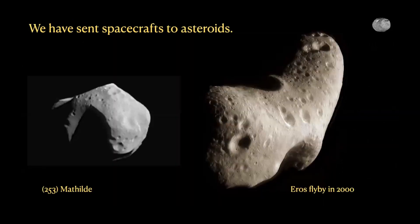We have sent spacecraft to asteroids — and we even landed on asteroids, which is very difficult given their small size, and brought back samples. Here is a flyby of Mathilda and a flyby of Eros — one of the largest asteroids, third or fourth largest. Look at the weird shape — it wasn't massive enough to melt. But look, there are craters on the asteroid. Other small asteroids crashed into this one as well. We have asteroids of all sizes, and you'd expect many more smaller asteroids than larger ones — so any asteroid will have smaller craters from the countless smaller ones around.